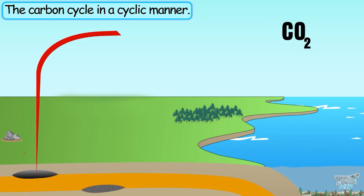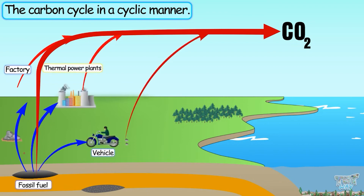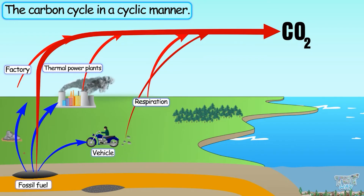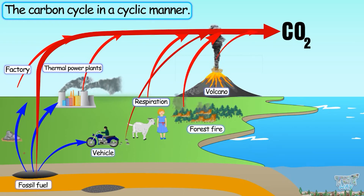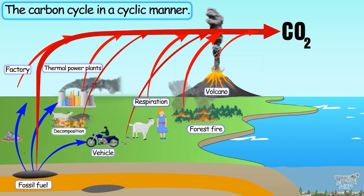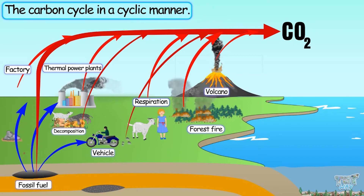Let's revise the carbon cycle in a cyclic manner. Carbon dioxide enters the air by burning of fossil fuels — used in factories, vehicles, thermal power plants, etc. Carbon dioxide also enters the atmosphere through respiration by all animals, through volcanoes and forest fires, through decomposition of dead and decaying organic matter, and through the process of weathering of rocks, which also releases some carbon into the atmosphere.